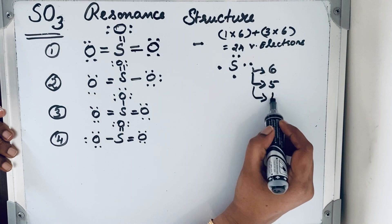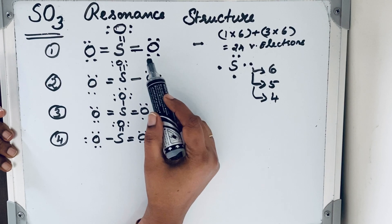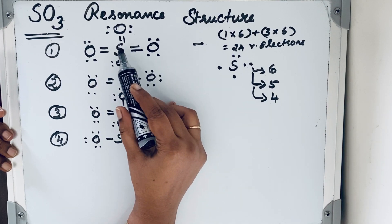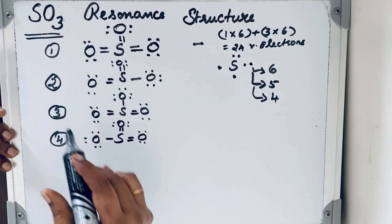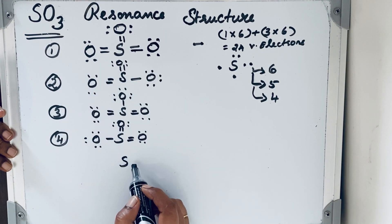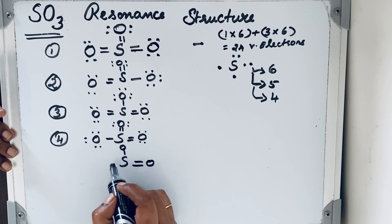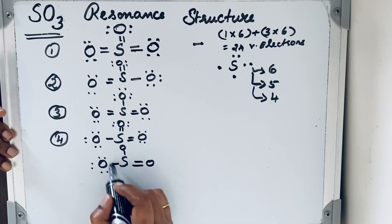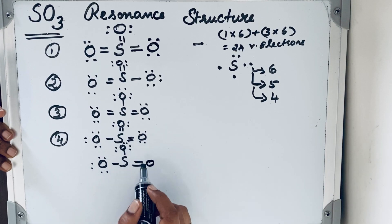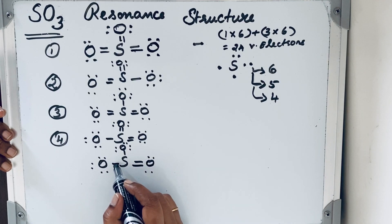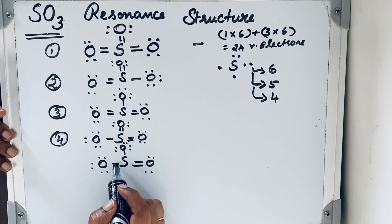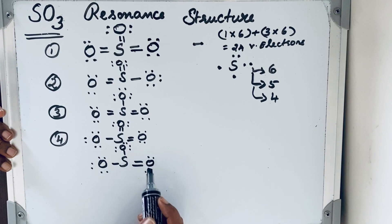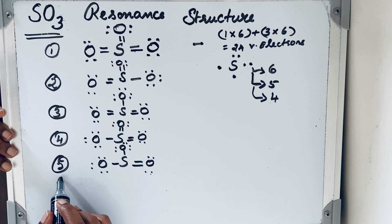Now let us try four covalent bonds. With four bonds, the possibility is one double S–O bond and two single S–O bonds. Completing the octets on all terminal oxygens and checking: 2, 4, 6, 8, 10, 12, 14, 16, 18, 20, 22, 24 — 24 valence electrons confirmed. This is the fifth resonating structure.